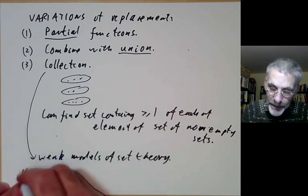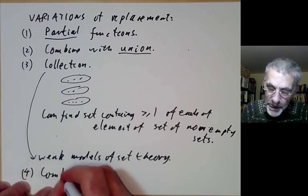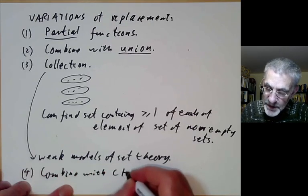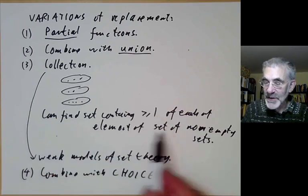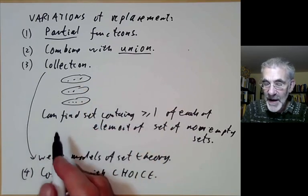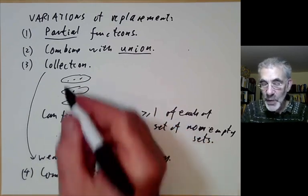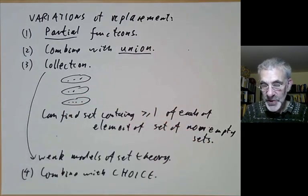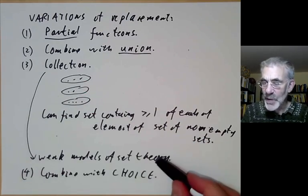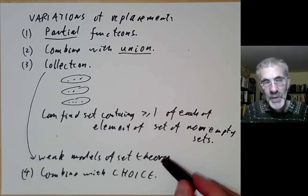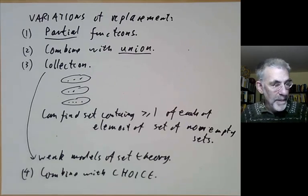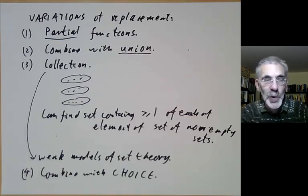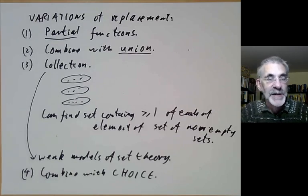We can also combine with the axiom of choice. The axiom of collection says you can find a set containing at least one element of each of these sets; if we replace 'at least one' by 'exactly one', we would actually get the axiom of choice. But that's probably not a good idea, because when you're looking at weak models of set theory, you usually don't want to include the axiom of choice. The next lecture will be about the most controversial of all axioms of set theory, which is the axiom of choice.